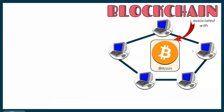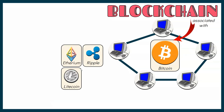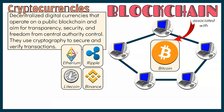Aside from Bitcoin, other cryptocurrencies include Ethereum, Ripple, Litecoin, and Binance. Cryptocurrencies are decentralized digital currencies that operate on a public blockchain and aim for transparency, security, and freedom from central authority. They use cryptography to secure and verify transactions in a network. Cryptography is also used to manage and control the creation of such currencies.